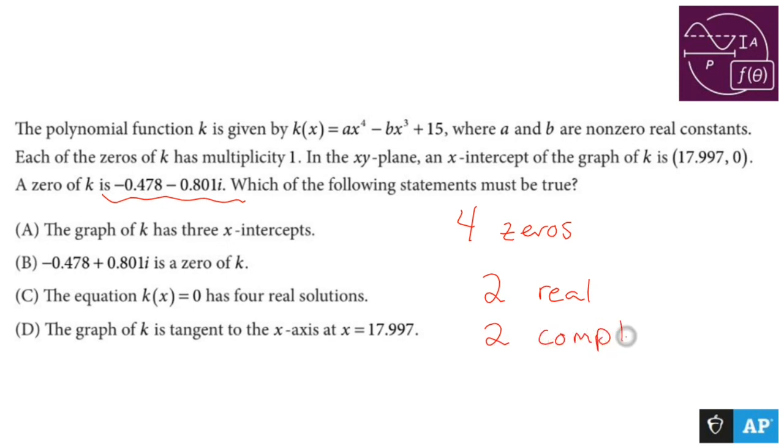Now, we're given one of the complex roots right here. Now, if we're given one complex root, it's safe to say that the other one is going to be its conjugate, which is 0.478 + 0.801i.